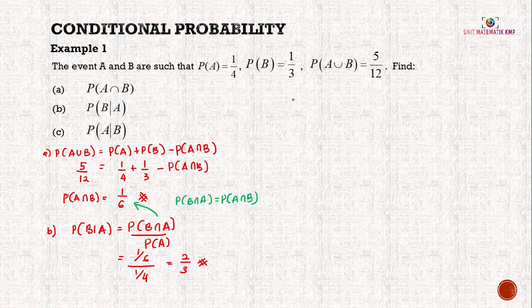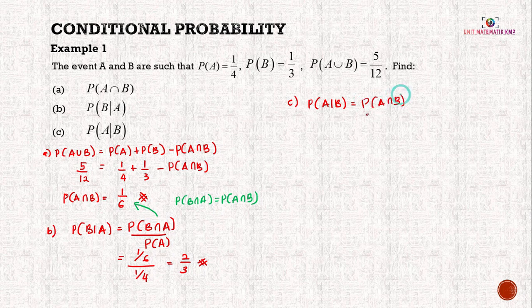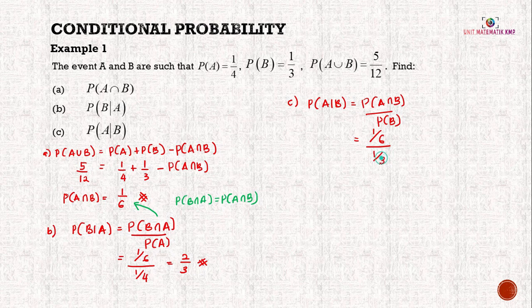For question C, we use the conditional probability formula as well: P(A|B) = P(A∩B) / P(B). From part A we already have P(A∩B) = 1/6, divided by P(B) = 1/3. Simplifying, the answer is 1/2.